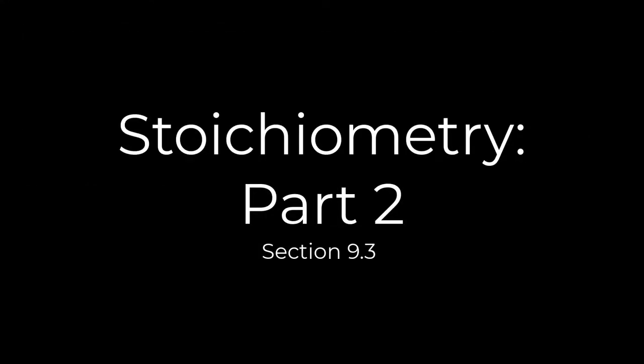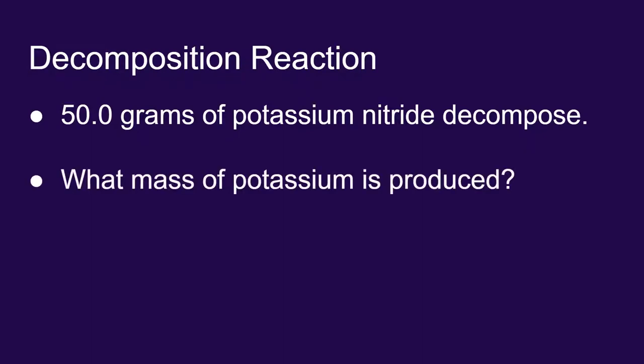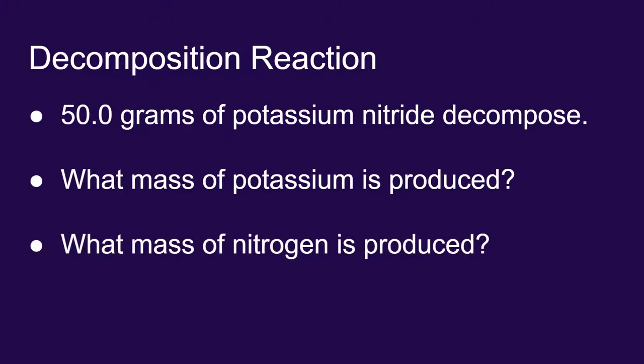Let's run through another stoichiometric calculation with a decomposition reaction. This time, let's decompose potassium nitride. If we start with 50 grams of potassium nitride, I want to know what mass of potassium will be produced and what mass of nitrogen will be produced.